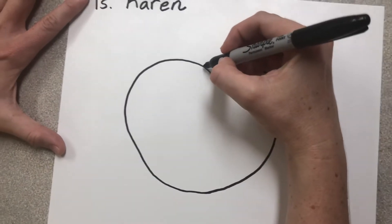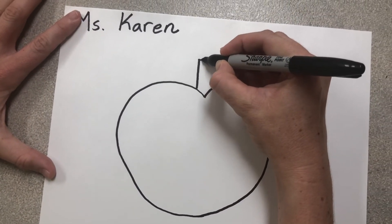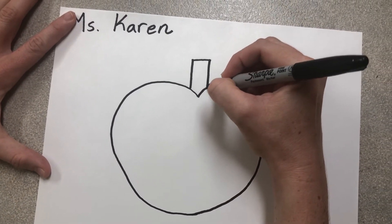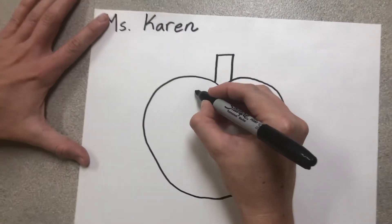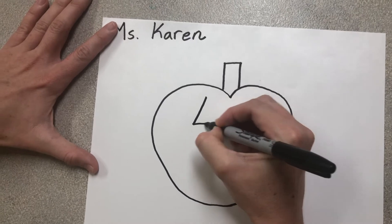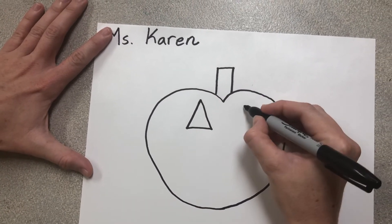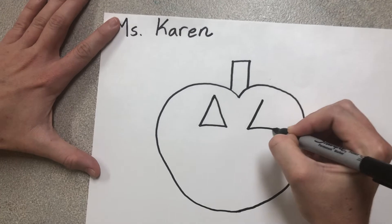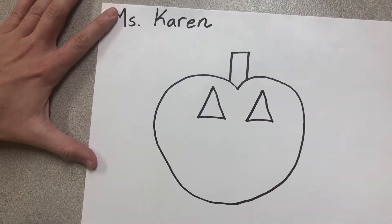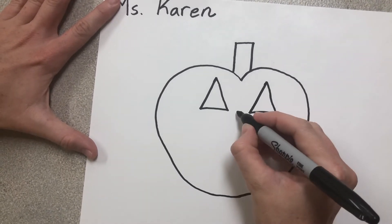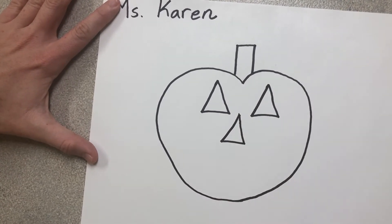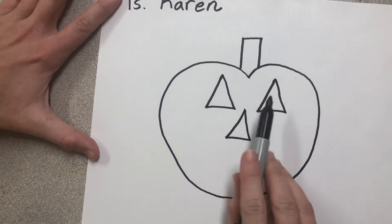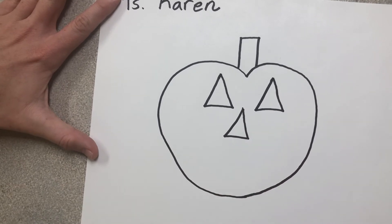Now we're going to draw a rectangle up here for our stem, ta-da! Now we need two triangles for the eyes, one, two, and another triangle for the nose. Altogether that's one, two, three triangles.